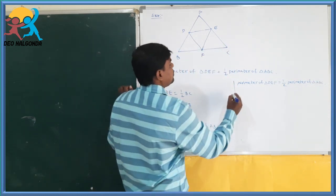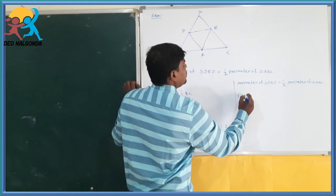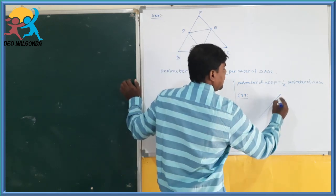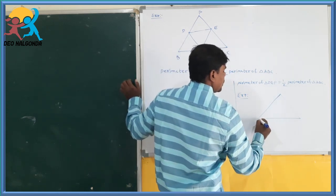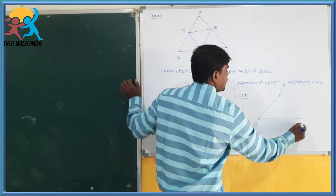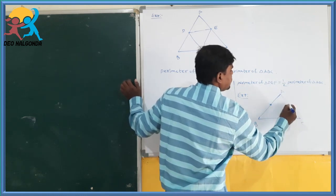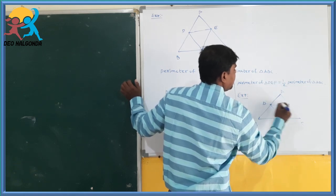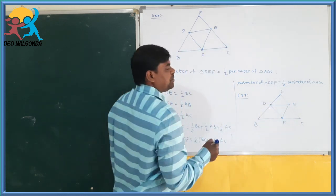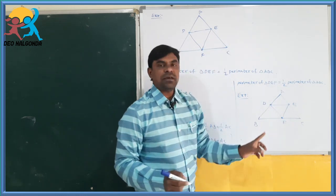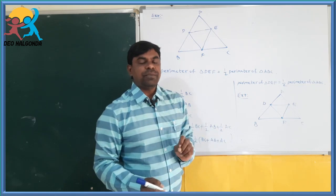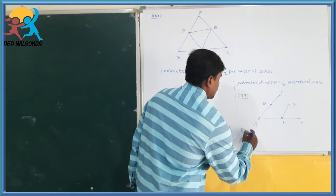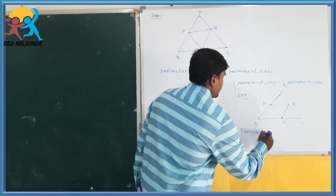For homework, Example 7: take triangle ABC, find the midpoints, join them and name them DEF. You have to prove that all four triangles formed are congruent to each other. Also, Exercise 8.4 is homework.